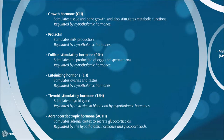The luteinizing hormone (LH) stimulates the ovaries and testes, and it is regulated by hypothalamic hormones. Thyroid-stimulating hormone (TSH) is a protein that stimulates the thyroid gland, regulated by thyroxine in blood as well as by hypothalamic hormones. Adrenocorticotropic hormone (ACTH) is a protein that stimulates the adrenal cortex to secrete glucocorticoids, regulated by hypothalamic hormones and by glucocorticoids. As we can see, almost all the hormones secreted by the anterior lobe are controlled by the hypothalamic hormones.